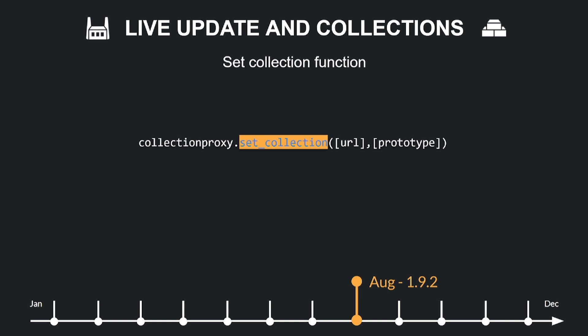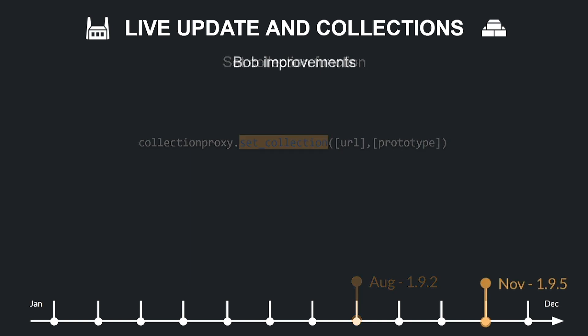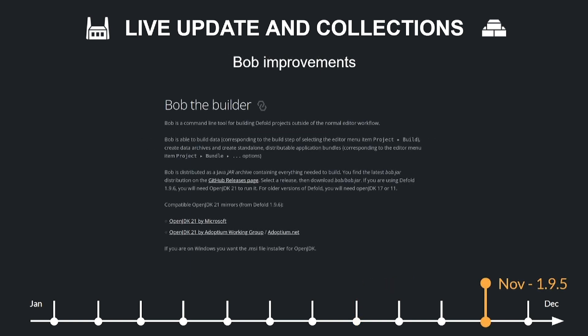Default added the function CollectionProxy.set_collection to replace collections for excluded collection proxies. This functionality is used in Live Update and is designed to simplify the management of resources loaded using Live Update features. Bob, the building program for Default, calculates how many game objects are used by each collection. If the collection has no factory or collection factory component, this value is used to allocate the exact number of game objects for the world; otherwise, CollectionMaxInstances is used.